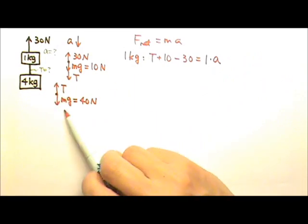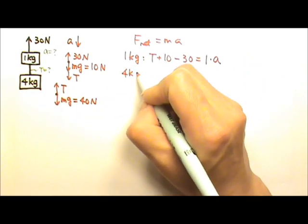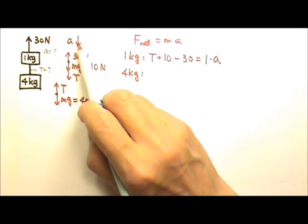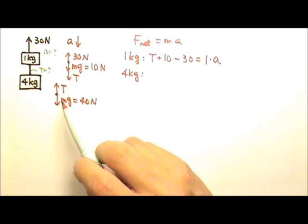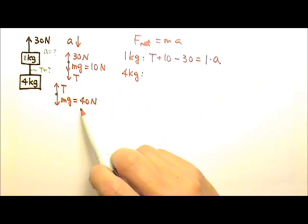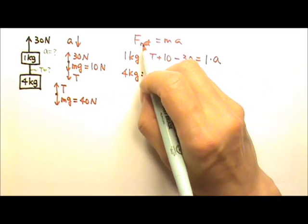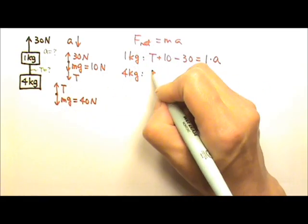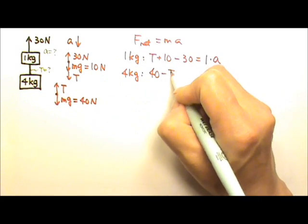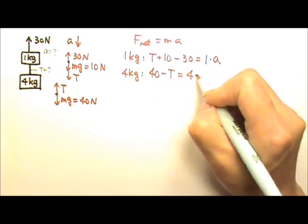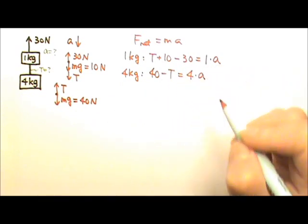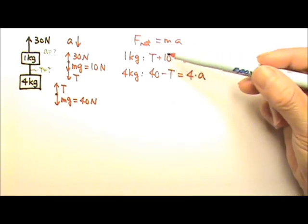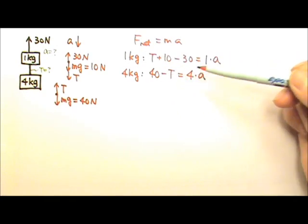For the 4 kilogram box, the acceleration also goes down, so the downward force is bigger. Therefore the net force is the bigger side minus the smaller side: 40 minus T equals ma. Now we have two equations with two unknowns, T and a.